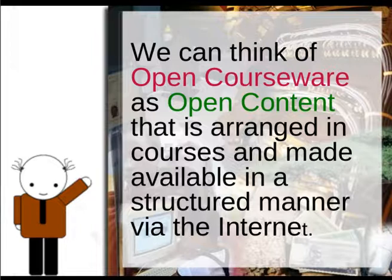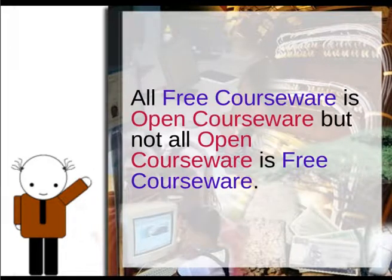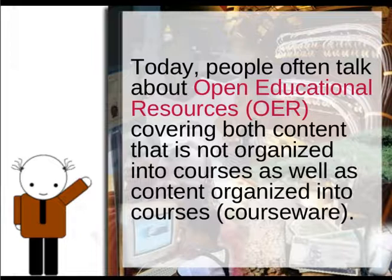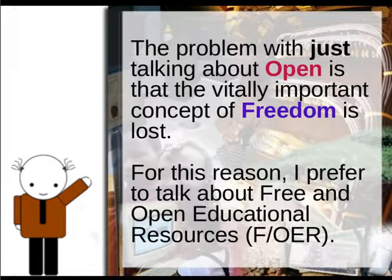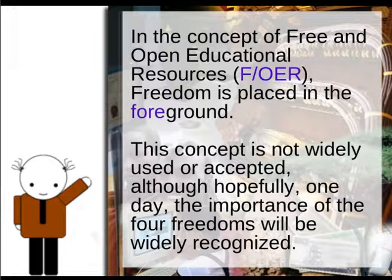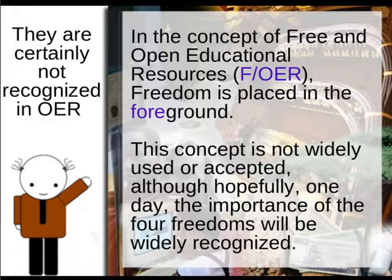We can think of open courseware — such as MIT OpenCourseWare — as open content arranged in courses and made available in a structured manner via the internet. All free courseware is open courseware, but not all open courseware is free courseware. MIT has open courseware, but it's not free courseware. Today people often talk about open educational resources, or OER, and UNESCO has just had their 10th anniversary of the coining of the term, celebrated with the Open Educational Resources Congress held in Paris. OERs cover both content organized into courses and content that is not. The problem with just talking about open is that the vitally important concept of freedom is lost. For this reason, I prefer to talk about free and open educational resources, or FOER, where freedom is placed in the foreground. This concept is not widely used or accepted, although hopefully one day the importance of the four freedoms will be widely recognized. They are certainly not recognized in most OER today.